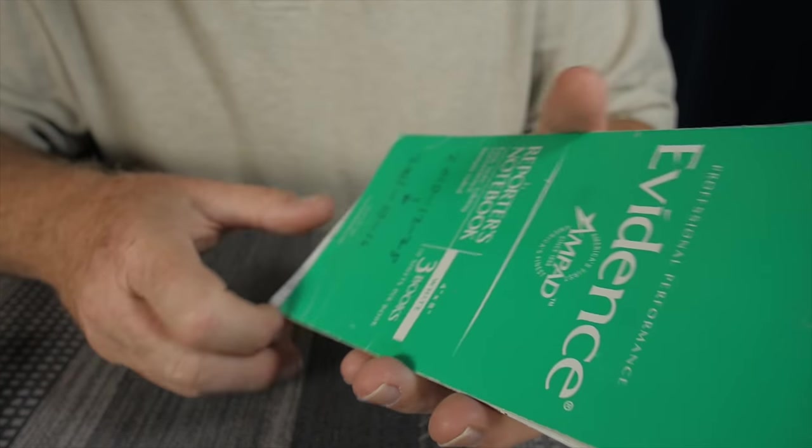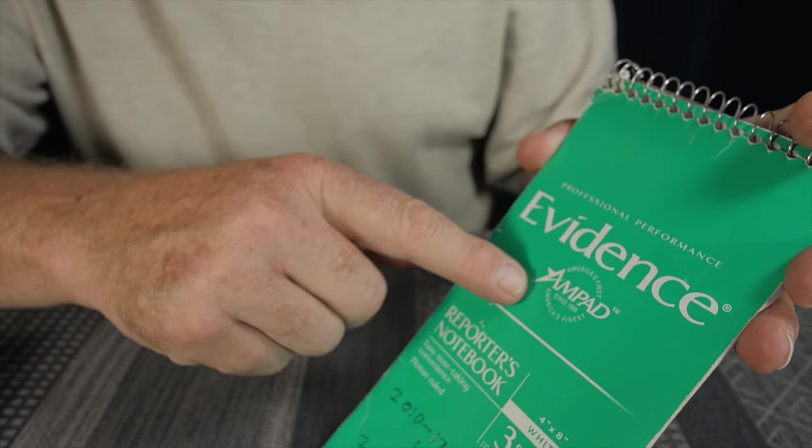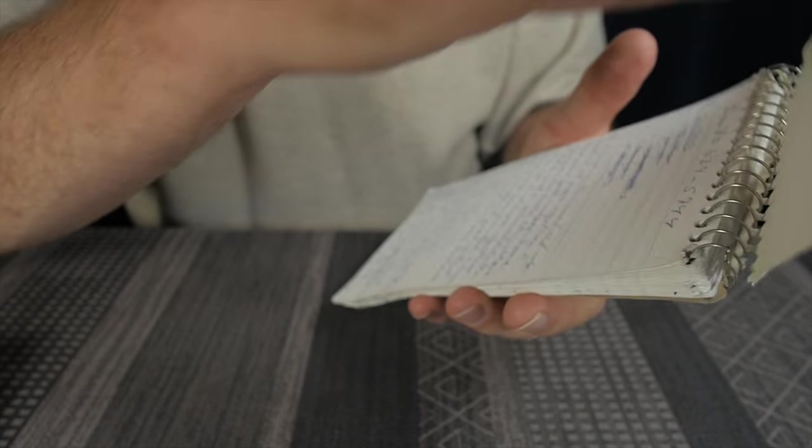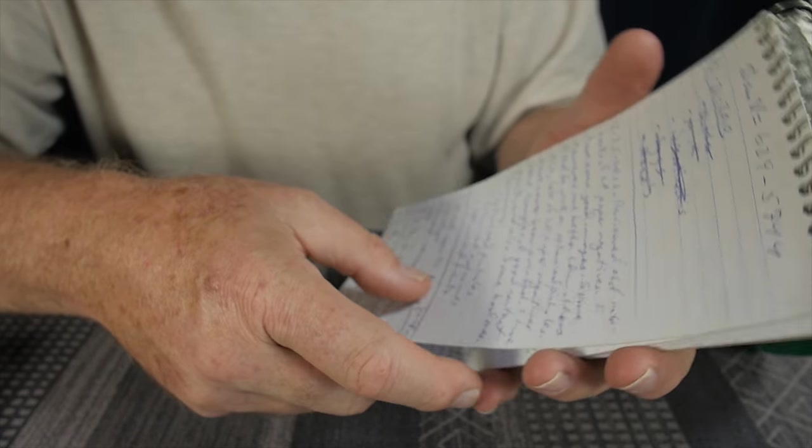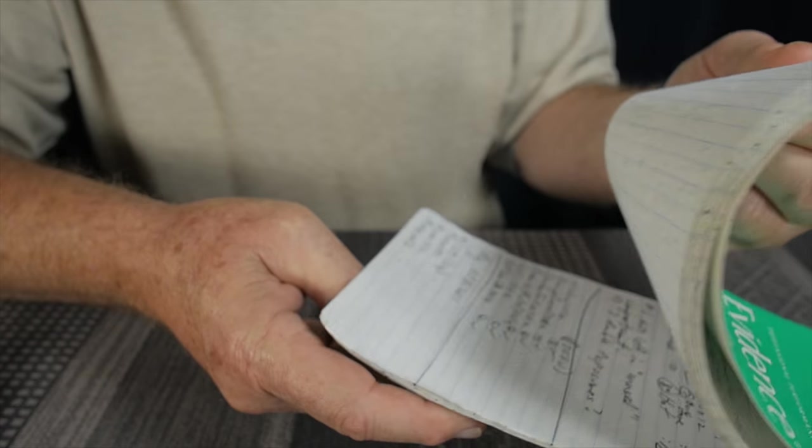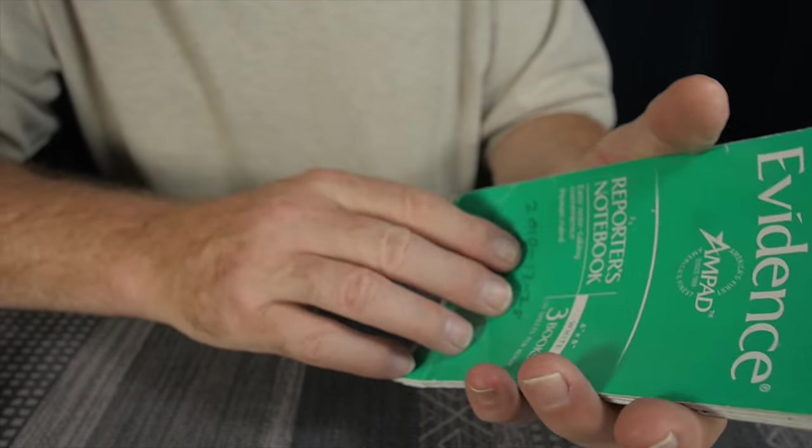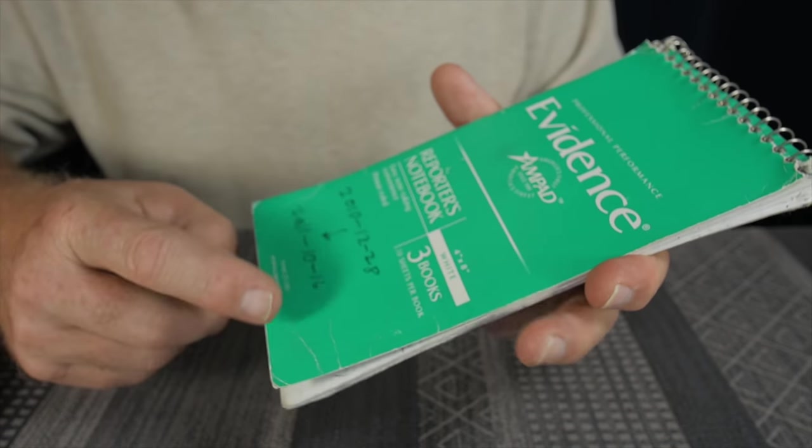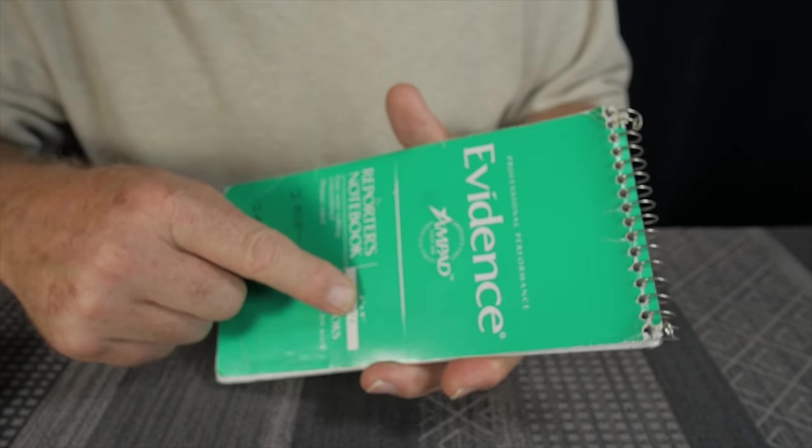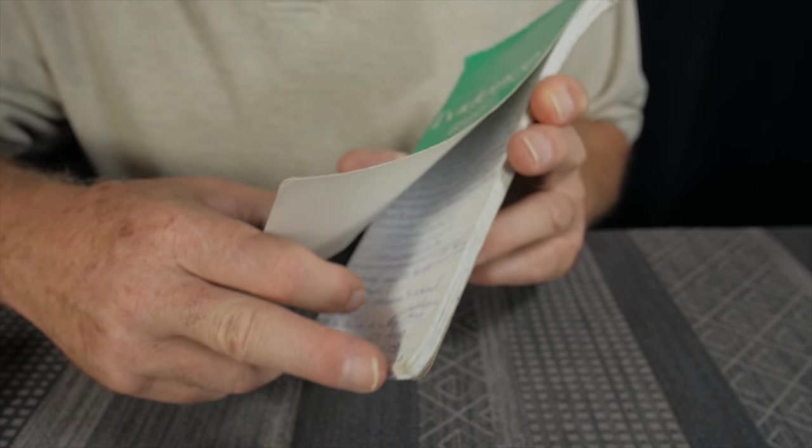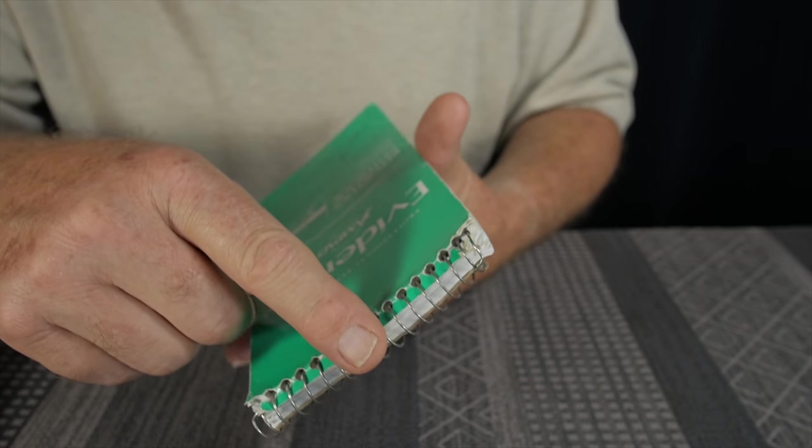And I do have an assortment of reporters notebooks. This is the Ampad Evidence brand reporters notebook. And I started this back in the year 2010. And this went up to 2011. I really enjoyed using these reporters notebooks. I'm almost thinking this might be a good system. So this particular one is four inches by eight inches in size.